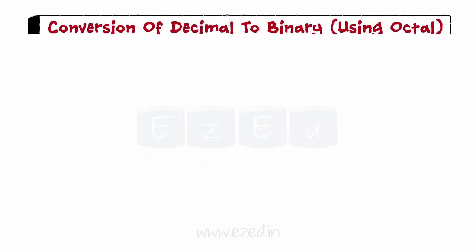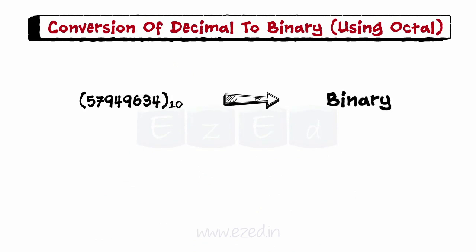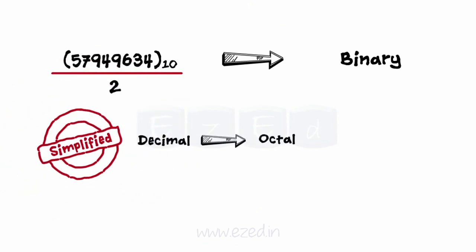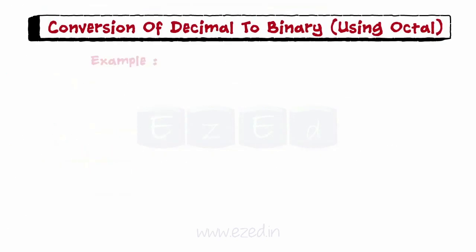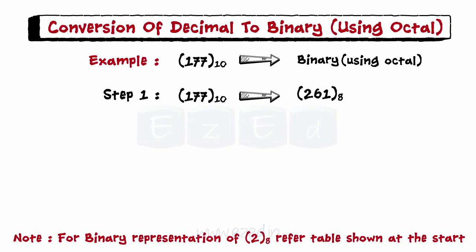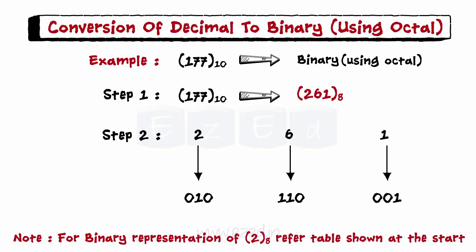Conversion of decimal to binary using octal: when numbers are large, conversion to binary would take a large amount of division by 2. It can be simplified by first converting the number to octal, and then converting each octal digit into its binary form. For example, convert 177 in decimal to its binary equivalent using octal. Step 1: Convert to octal first — this yields 261 in octal. Step 2: Convert each octal digit into its 3-bit binary form: 2 is replaced by 010, 6 is replaced by 110, and 1 is replaced by 001. The binary equivalent of 177 decimal is 010 110 001.